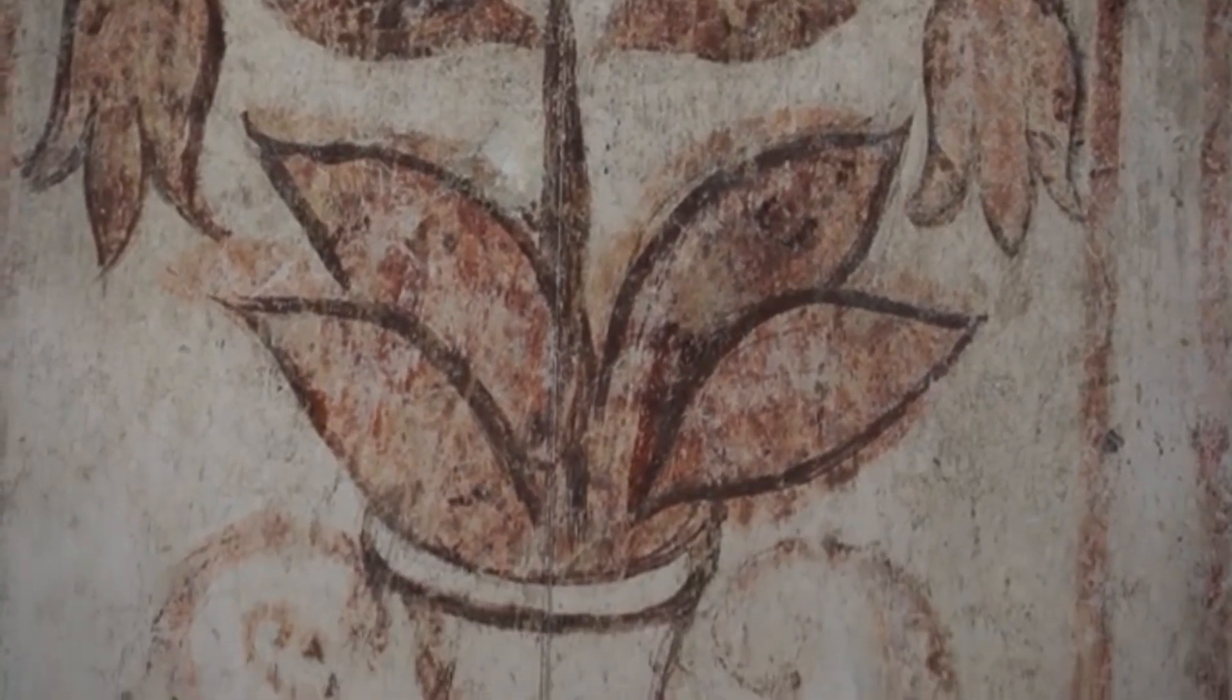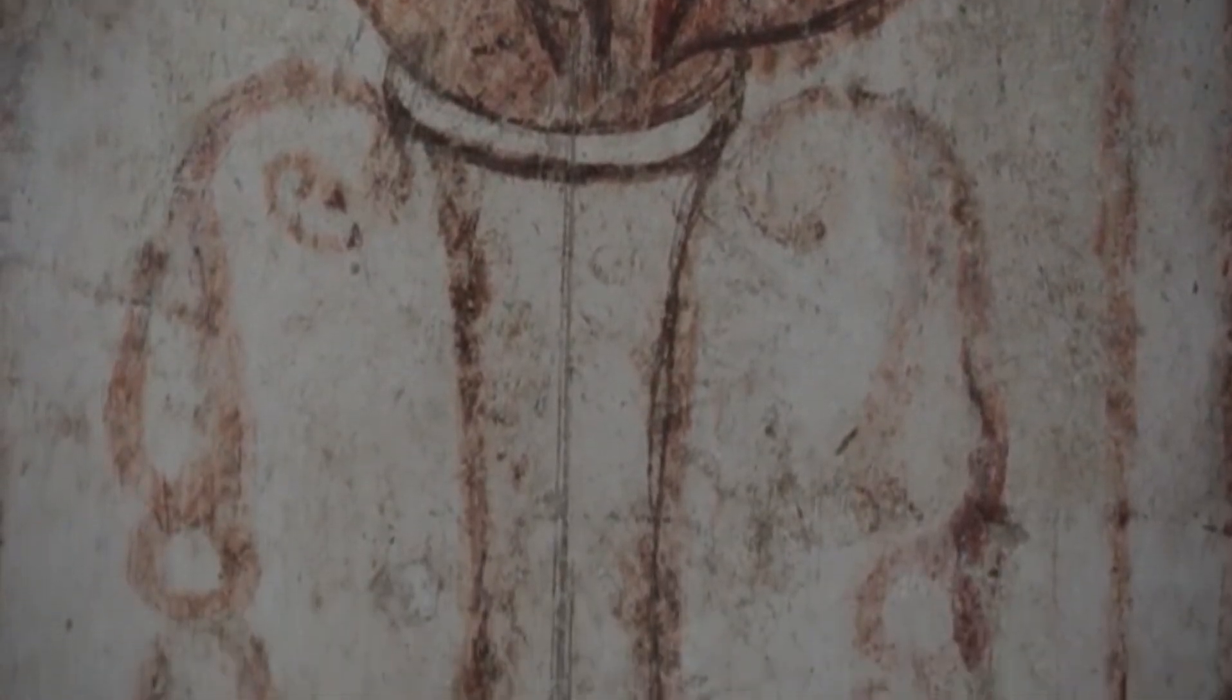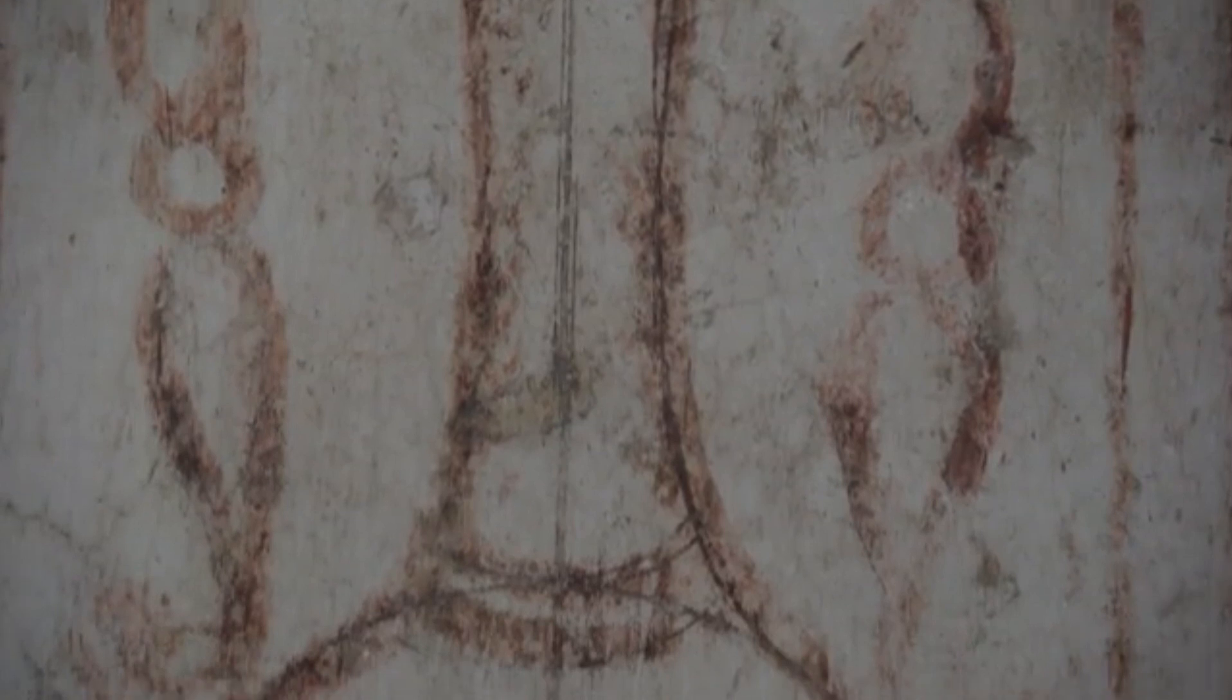And here's something even more shocking. The blood is still red. Most dried blood turns brown or black, but this blood remains a striking red. Why?